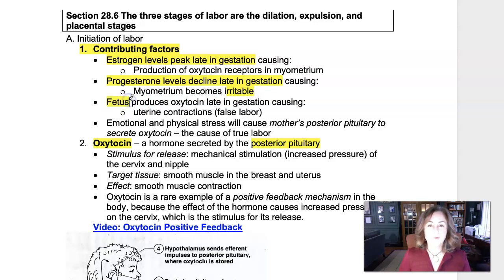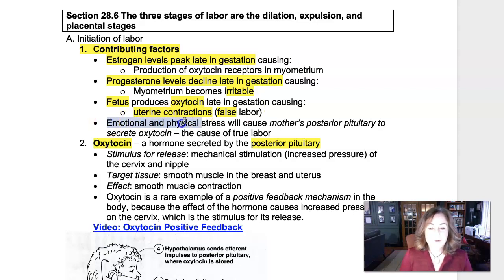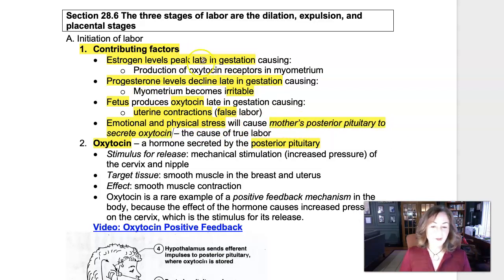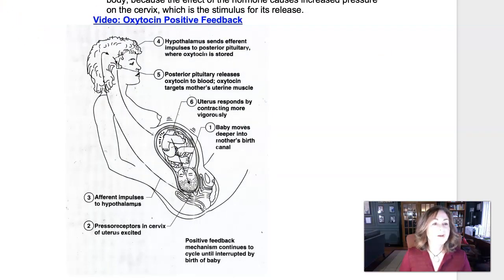Additionally, the fetus can secrete hormones — the fetus can secrete oxytocin, and when it does, that makes the uterus contract too, but that's considered false labor. Also, cortisol levels in the fetus increase late in gestation, which can irritate the mother's uterus and cause contractions. All of these random contractions can increase physical and emotional stress on the mother. But once the mother's posterior pituitary starts secreting oxytocin due to this stressful situation, that is the onset of true labor. With oxytocin, it's a positive feedback loop.